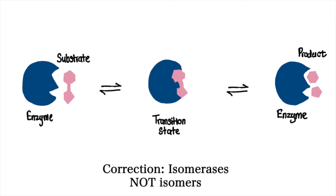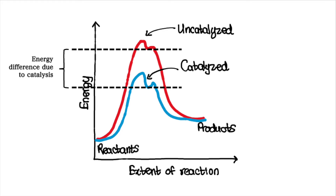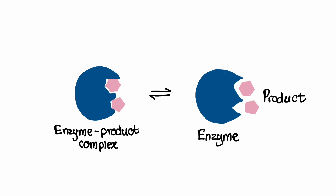Then we have the catalysis phase. Isomerases facilitate the rearrangement of atoms within the substrate molecule by providing an alternative reaction pathway with a lower activation energy. This might involve the breaking and forming of chemical bonds or the rotation of specific atoms or groups within the molecule. Finally, after the isomerization reaction has occurred, the products are released from the active site of the enzyme. The enzyme itself is not consumed or altered during the reaction and can therefore continue to catalyze further isomerization reactions.